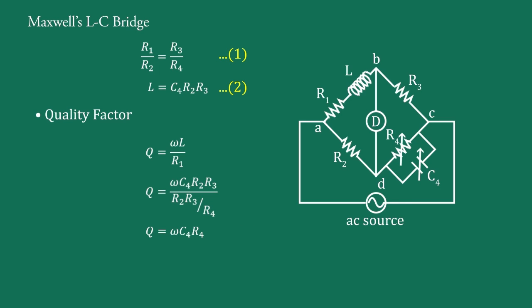It is also used for low quality factor, but for low quality factor another alternative is available — that is Anderson's bridge. So we use Maxwell's bridge for medium quality factor only.